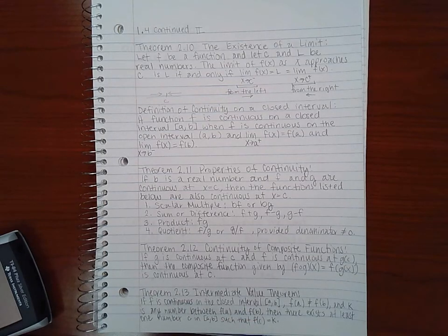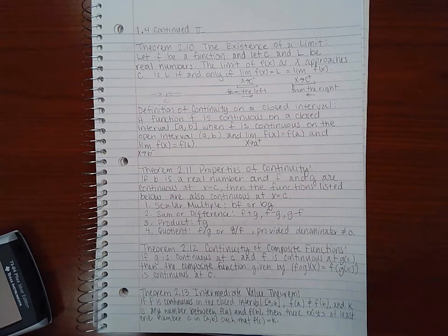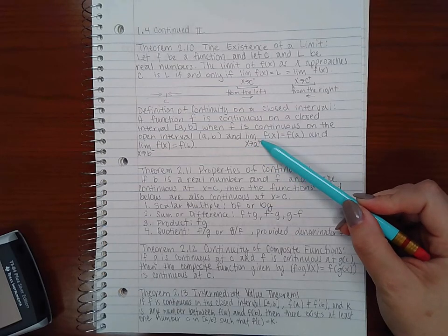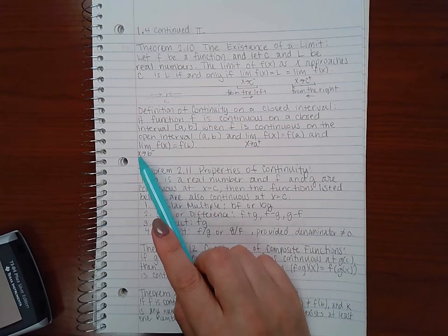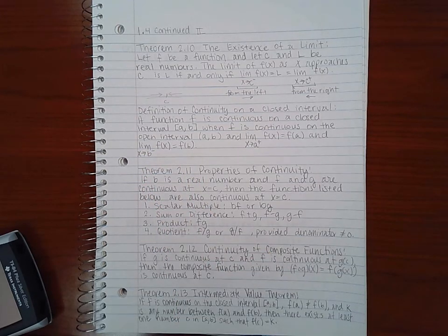Now, the definition of continuity on a closed interval. A function f is continuous on a closed interval a, b, when f is continuous on the open interval a, b, and the limit as x approaches a from the right is equal to f of a, and the limit of f as x approaches b from the left is equal to f of b.